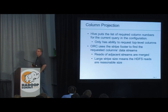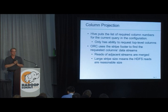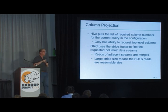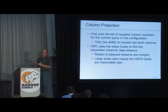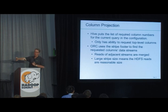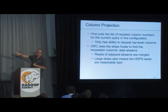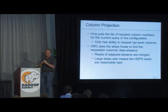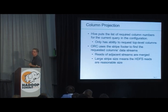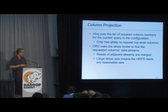Column projection lets you read only the bytes for the columns you need out of hundreds. With ORC, I have the directory, so I can identify exactly which bytes are needed for each column. If adjacent columns are requested, I collapse their reads into one large read for efficiency.